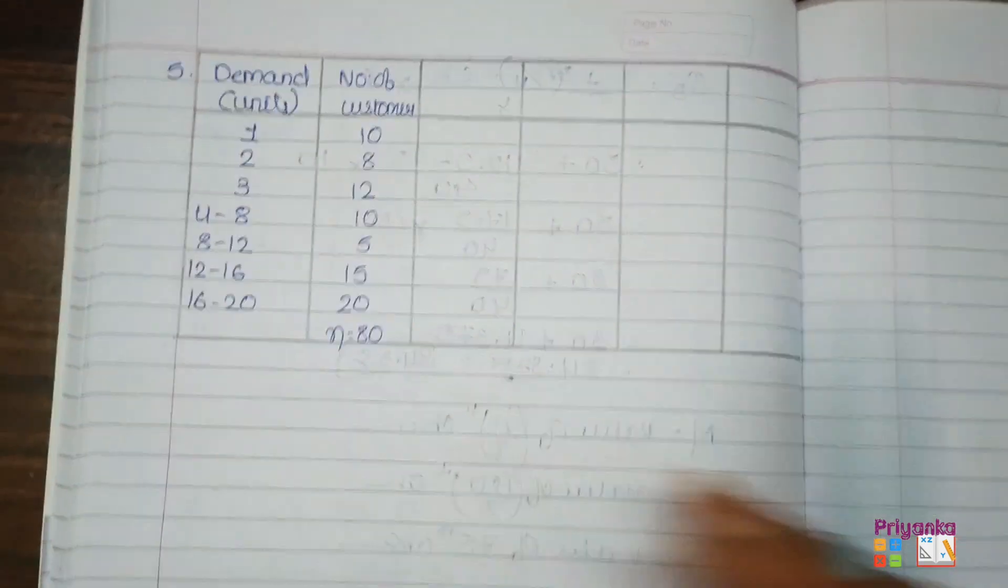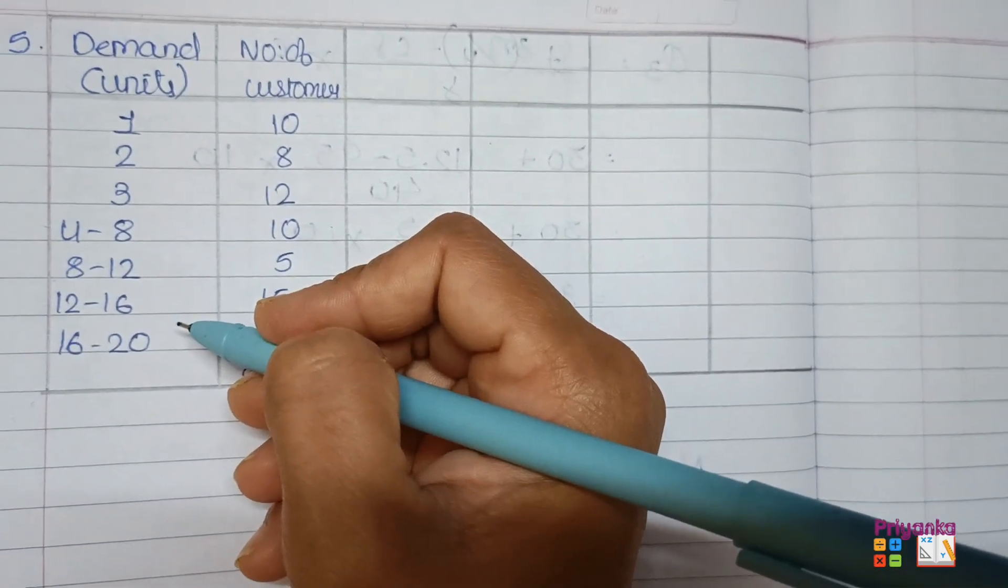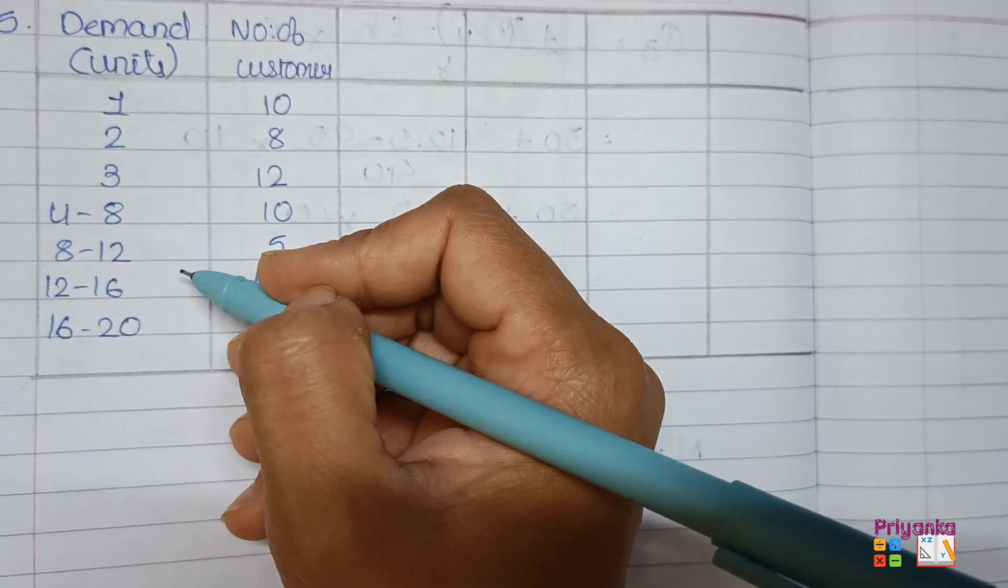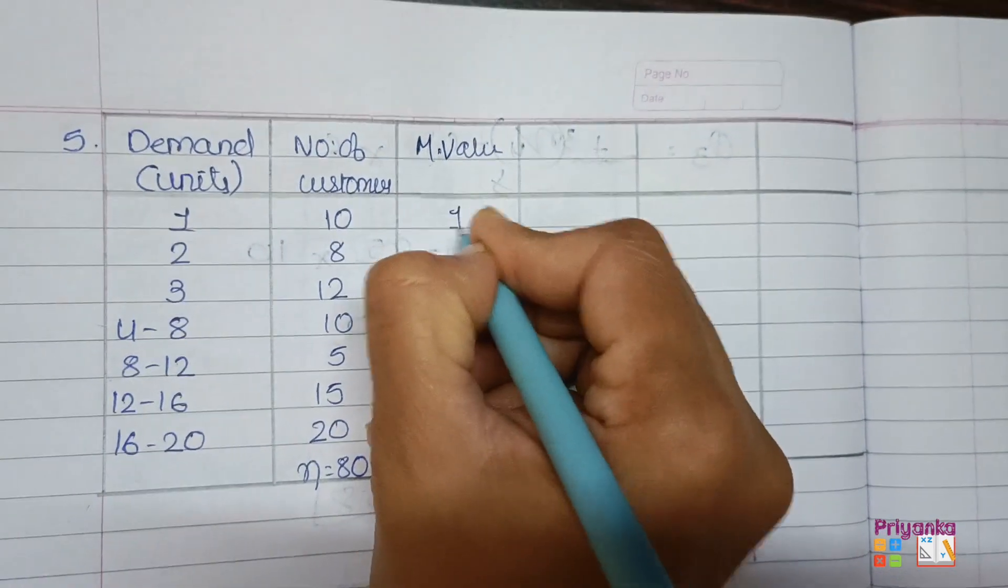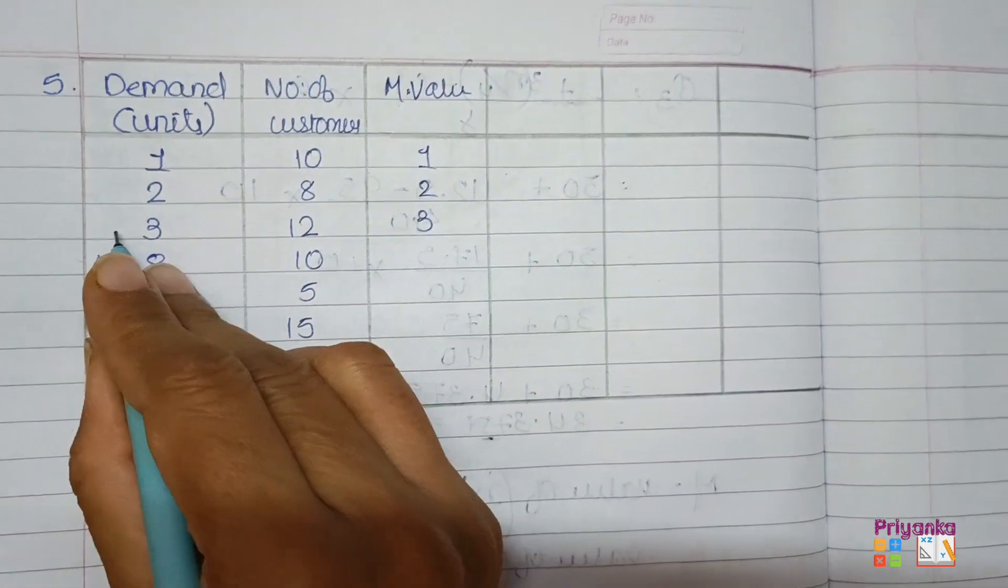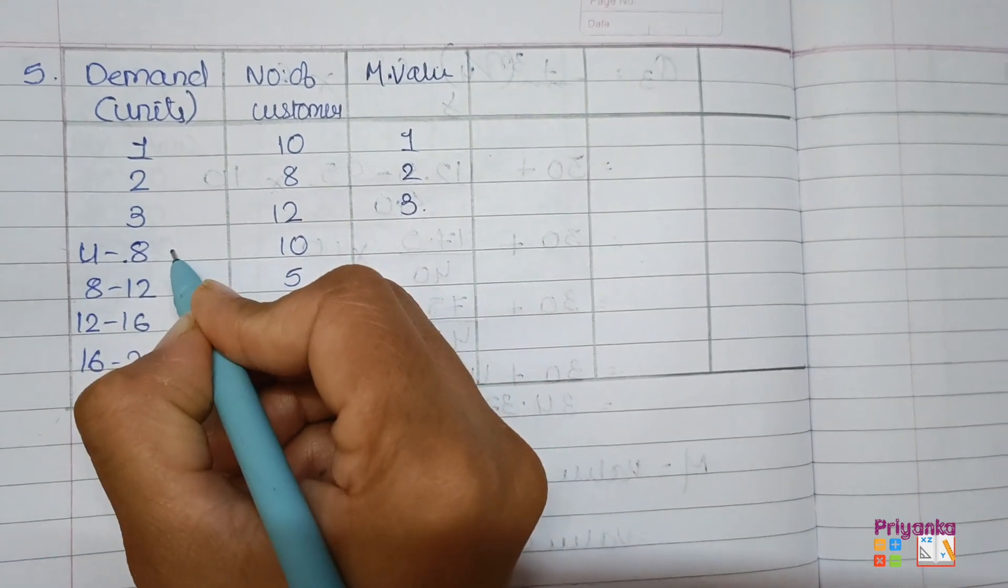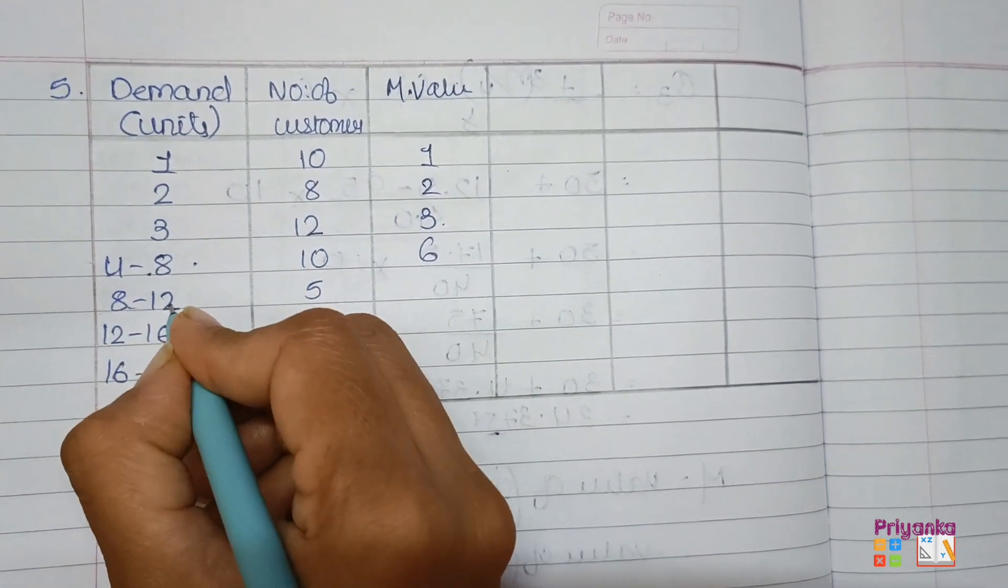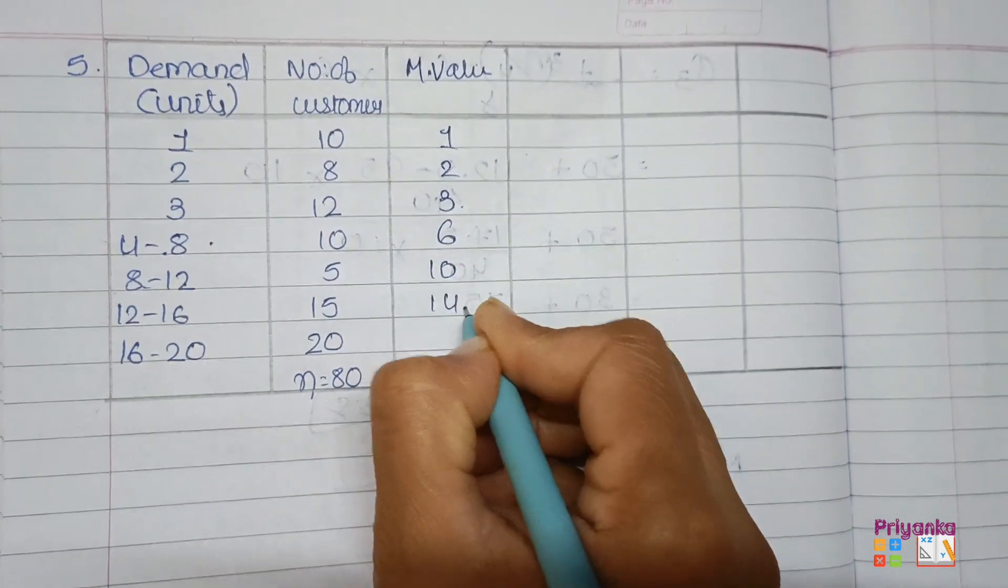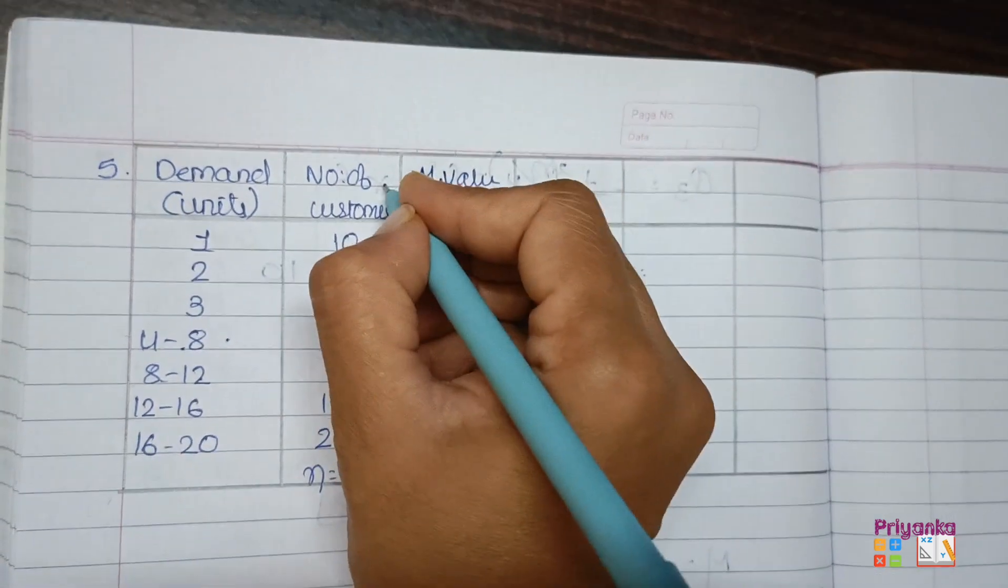So first take the information in the book. Here I took information. So as the other information is given in continuous frequency, we'll find out mid value. The value 1, 2, 3 key value as it is, just copy down. To find out mid value, 4 plus 8 divided by 2 you will get 6, 8 plus 12 will be 20 divided by 2 is 10. This is how to find out for the next.